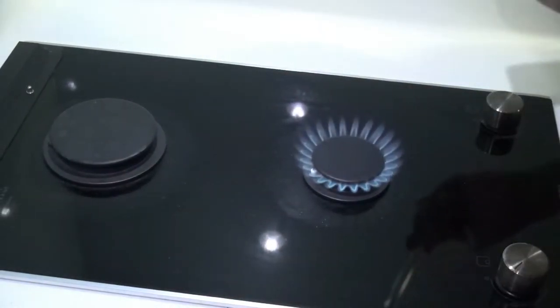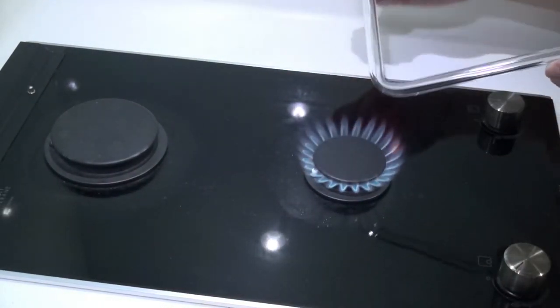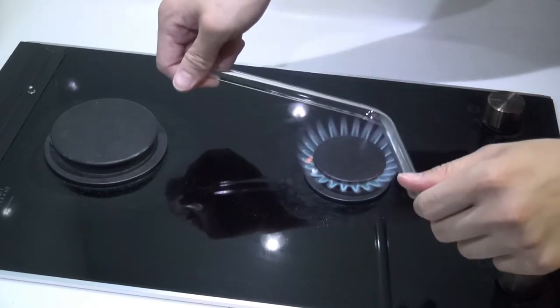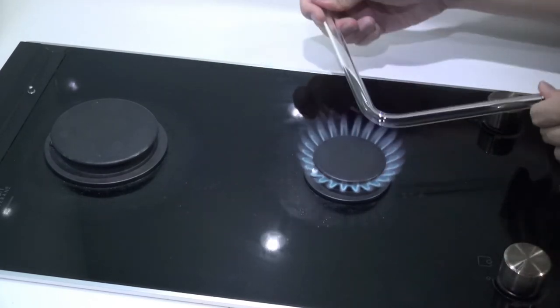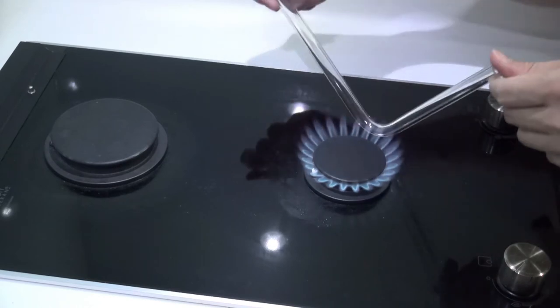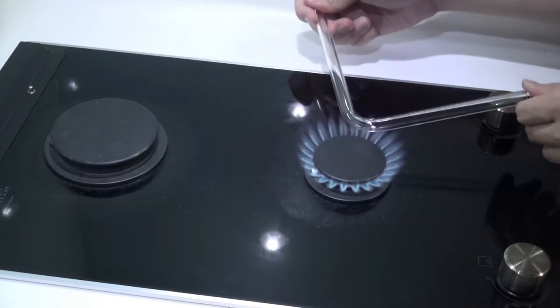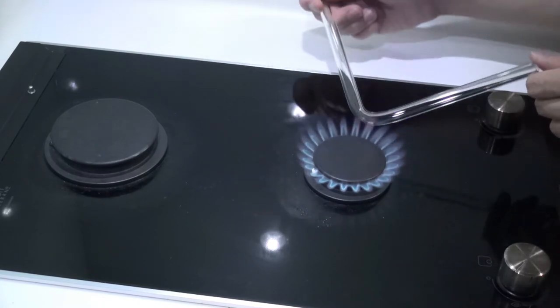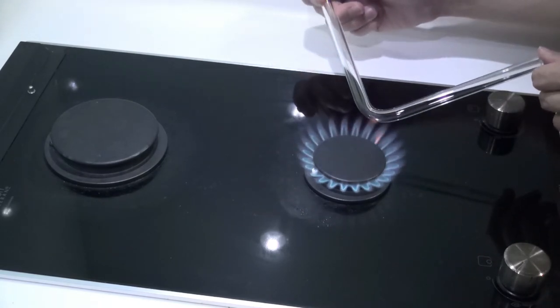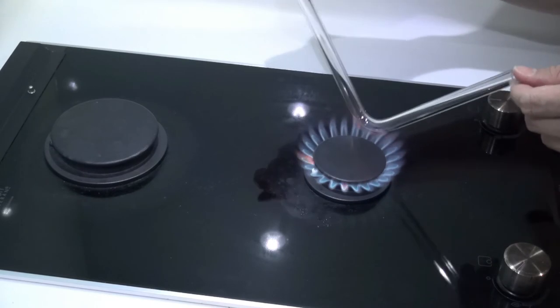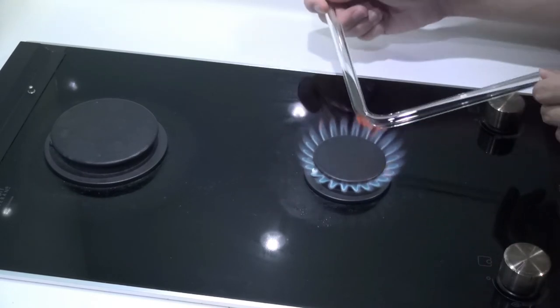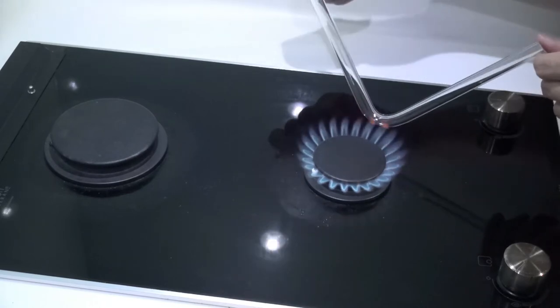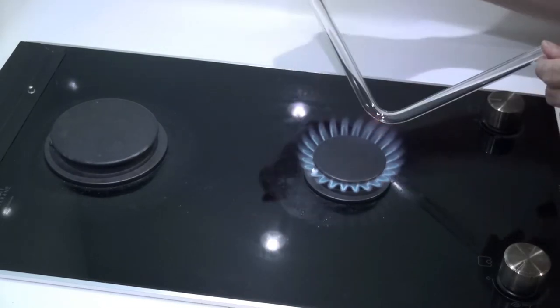All right, now your job is not over yet. You need to anneal it. Just turn the flame down and proceed. How long, you ask? I'll say about five minutes. What you want to achieve now is not the orange flame - it's just trying to relax the glass, they call it.